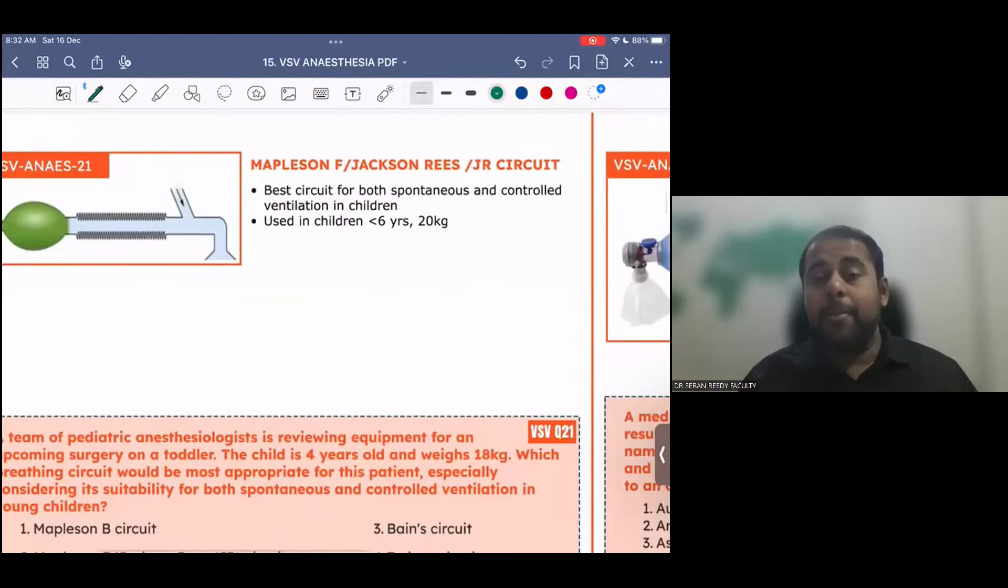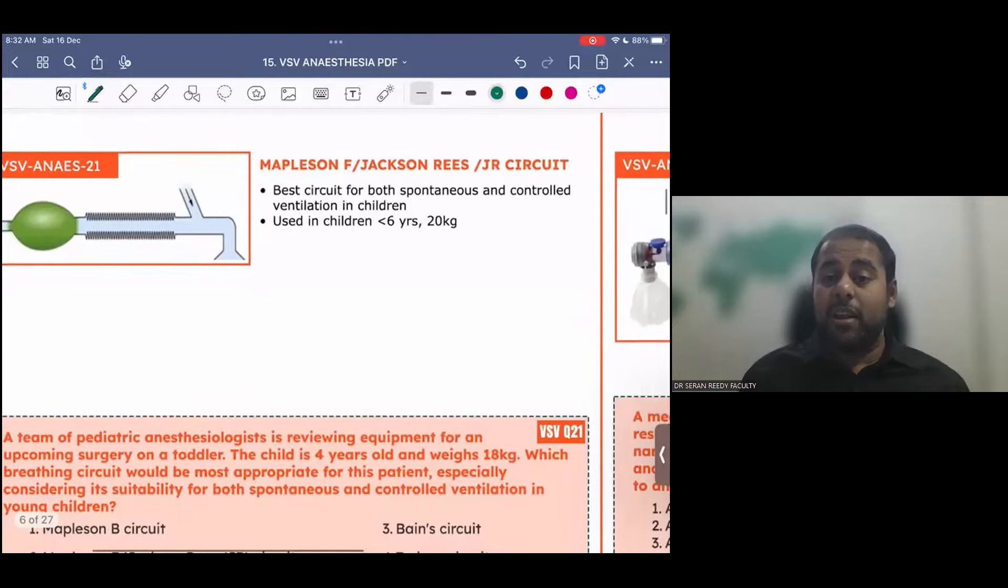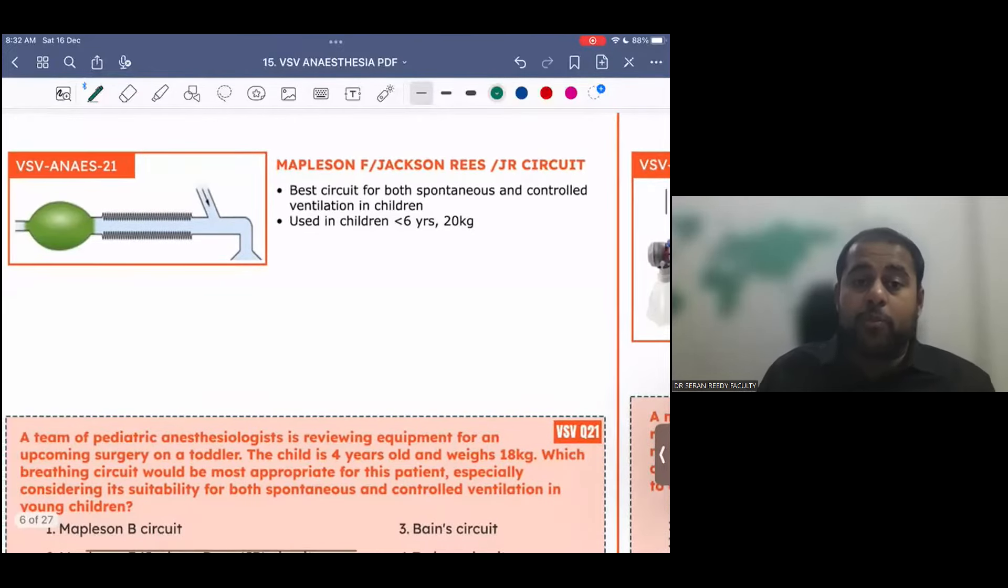This is called the Mapleson F circuit or Jackson Rees circuit or Jazz circuit. It is the best circuit for both spontaneous and controlled ventilation in children. How can you identify this? See, this doesn't have a closed APL valve. And this is the best circuit for both spontaneous and controlled ventilation in children. It is usually used in children less than 6 years and less than 20 kilos.